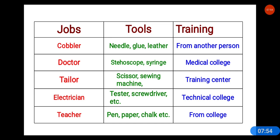Next is tailor. Tailor uses scissors, a sewing machine, needles, etc. Tailor gets training from a training center or learns from others. Electrician uses tools such as tester and screwdriver, and gets training from a technical college. Teachers use pen, paper, chalk, and board, and get training from college.